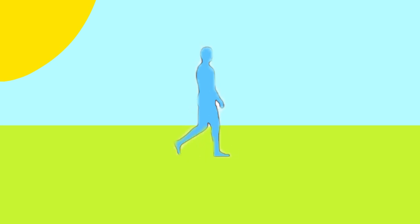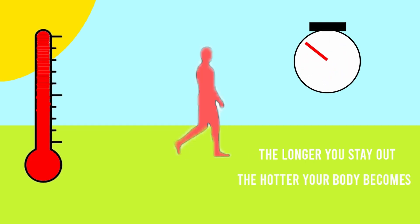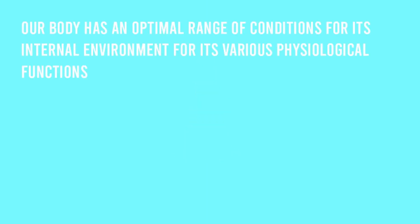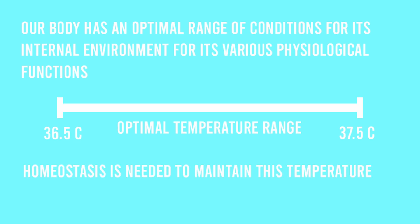Let's look at an example. Let's say that you're going out for a walk in the sweltering summer heat for a few hours. What you'll find as you continue walking is that the longer you stay out, the hotter your body becomes. In fact, if you stay for too long, your body might become overheated, leading to you passing out. Our body has an optimal range for its internal environment for its various physiological functions. In this case, our body has an optimal temperature of 36.5 to 37.5 degrees Celsius, or 97 to 99 degrees Fahrenheit. Homeostasis is needed to maintain that temperature within our body.